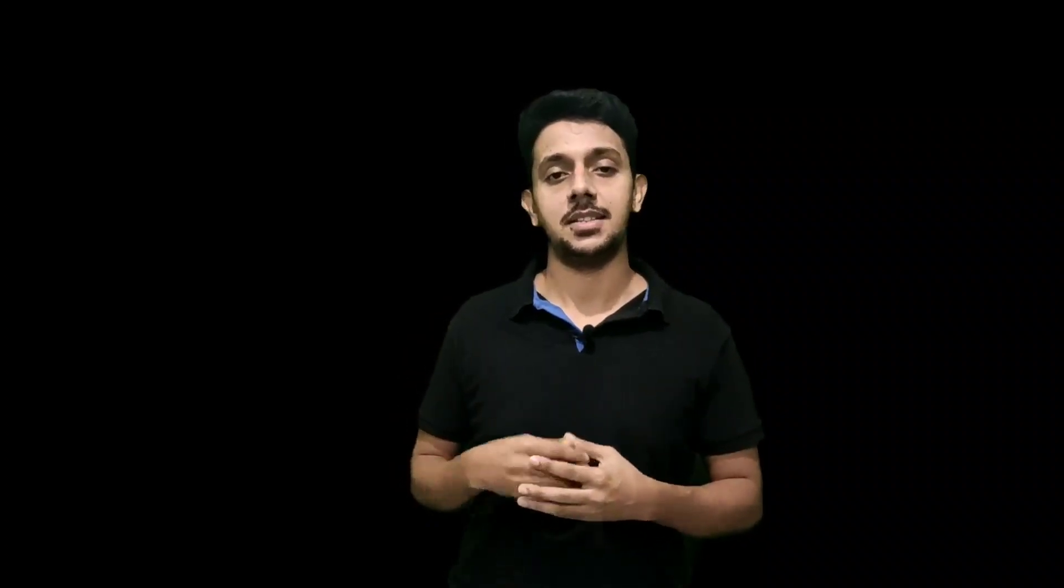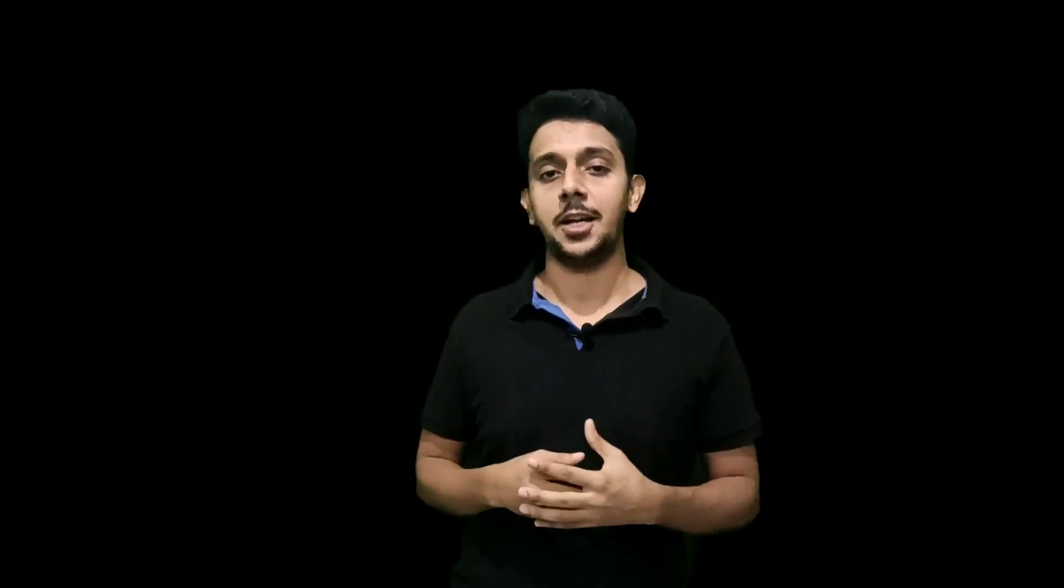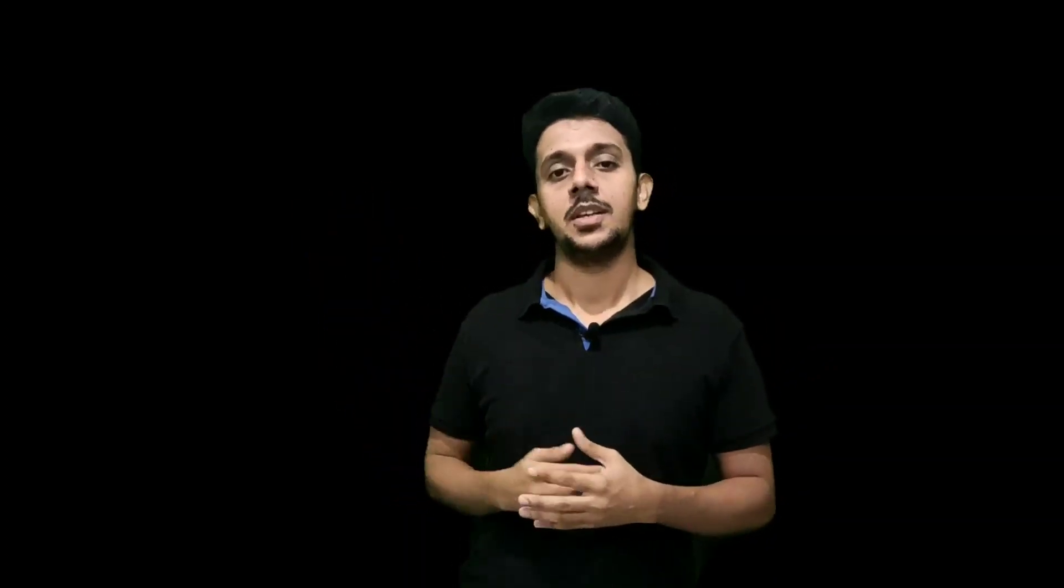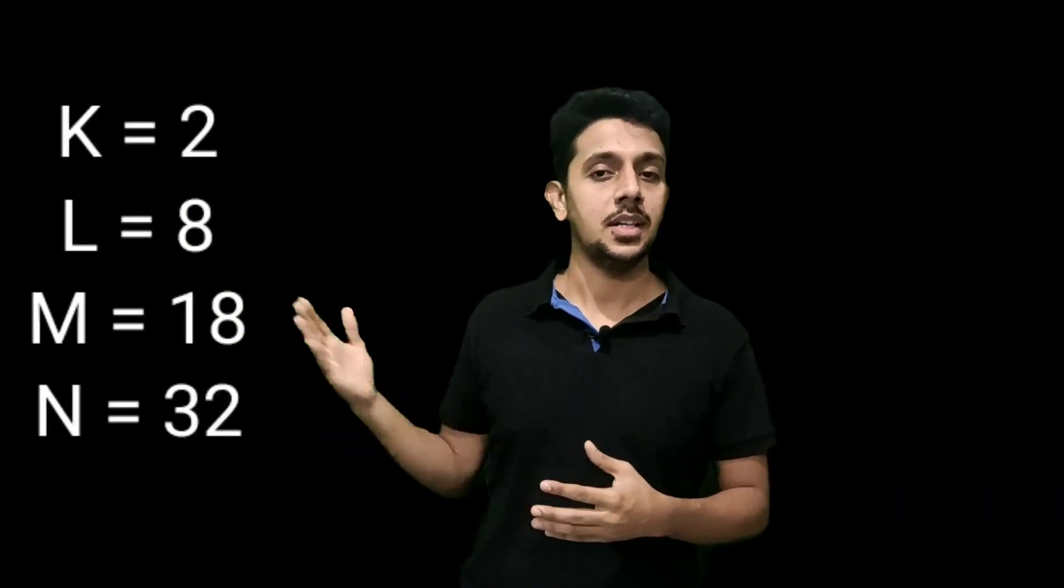Electrons are distributed in shells according to certain rules, and that is known as electronic configuration. We learned some electronic configurations in 9th standard. Each shell has a maximum number of electrons it can hold.